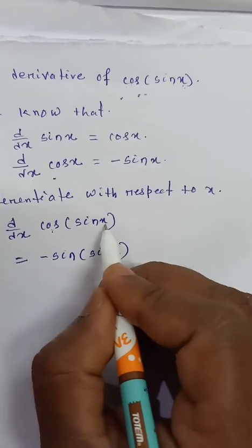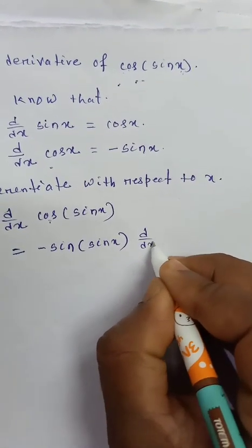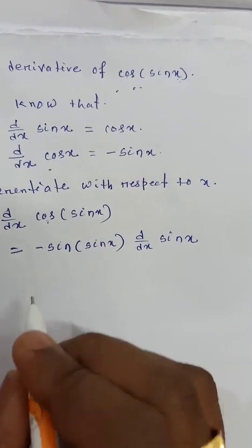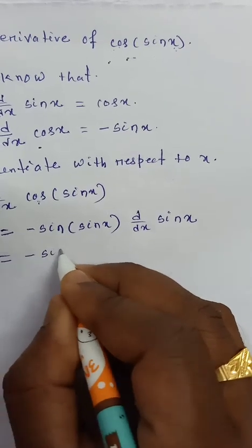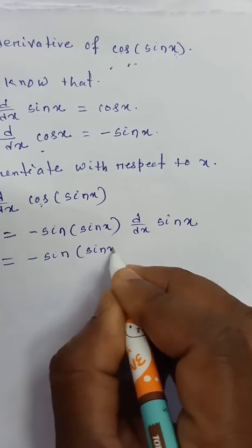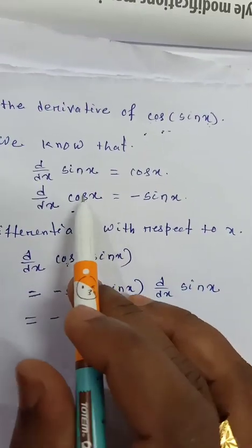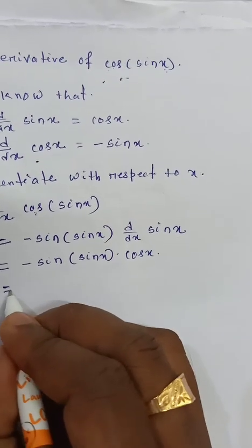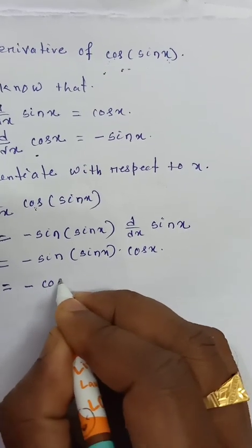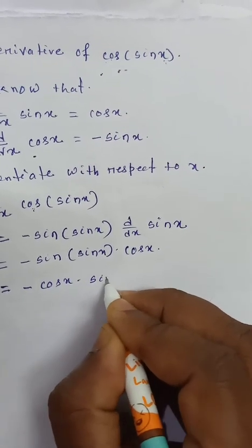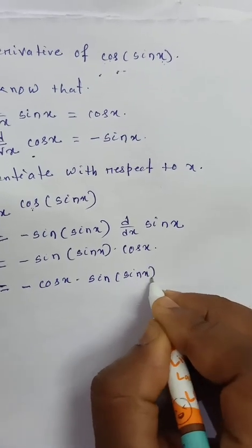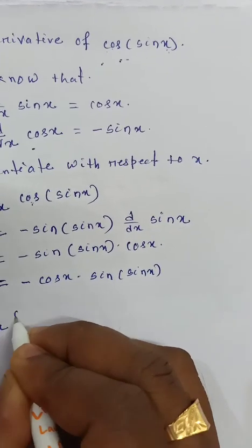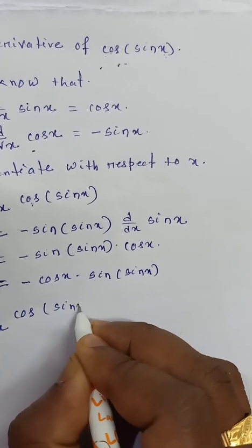We also multiply by the derivative of sin x with respect to x, which is cos x. So the final result is minus cos x times sin(sin x). Therefore, d/dx of cos(sin x) equals minus cos x times sin(sin x).